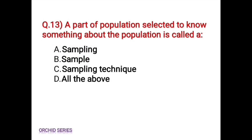Next question: a part of population selected to know something about the population is called — Option A, sampling. Option B, sample. Option C, sampling technique. Option D, all the above. The correct answer is Option B, sample. A part of the population selected to know something about the population is called a sample.